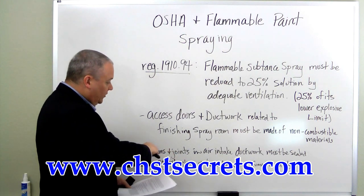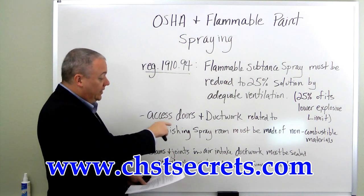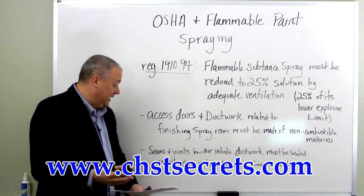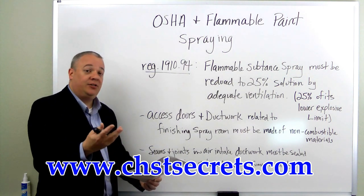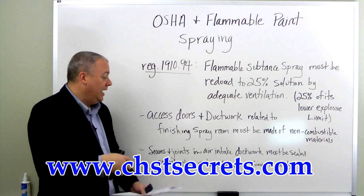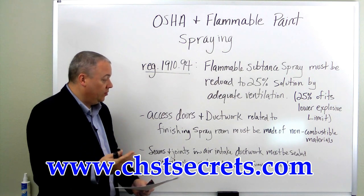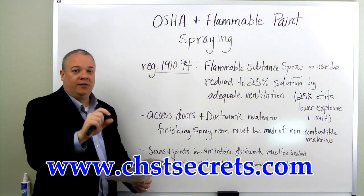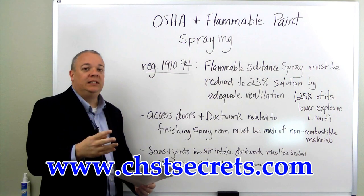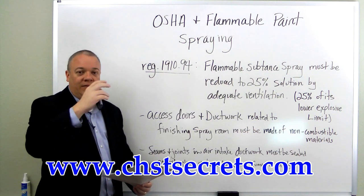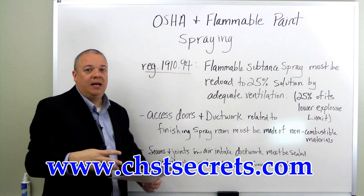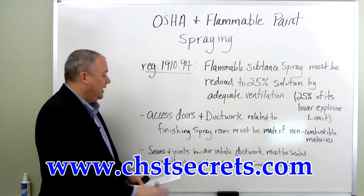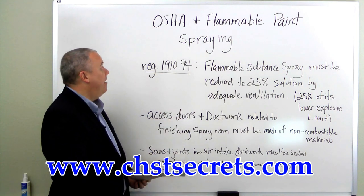And finally, seams and joints in the air intake ductwork must also be sealed against the possible release of hazardous vapors, hazardous fumes, or hazardous mists. So non-combustible materials along with sealing, so that any flammable substance — fumes, vapors, mists — cannot escape.